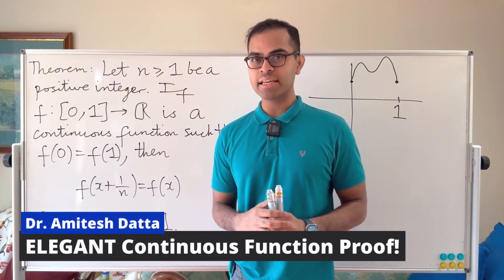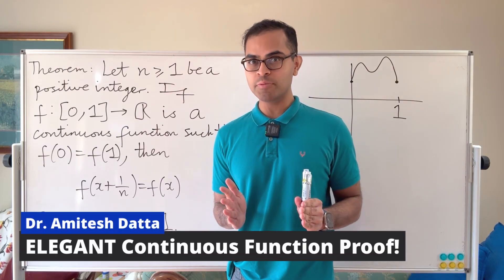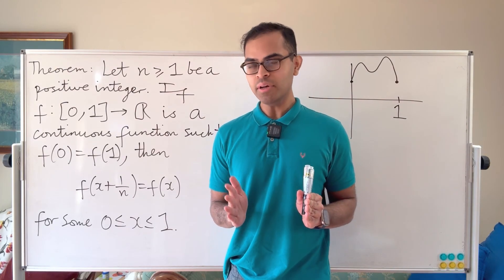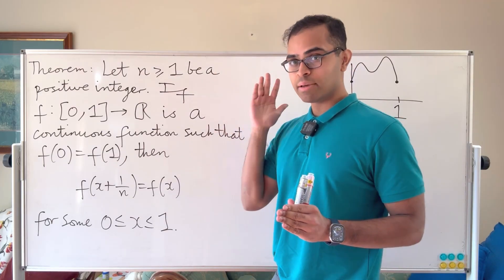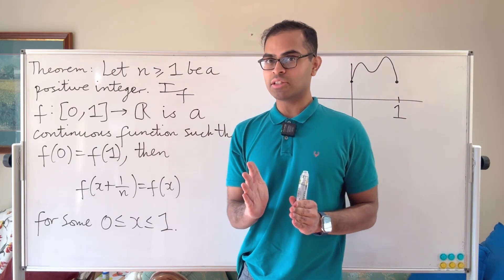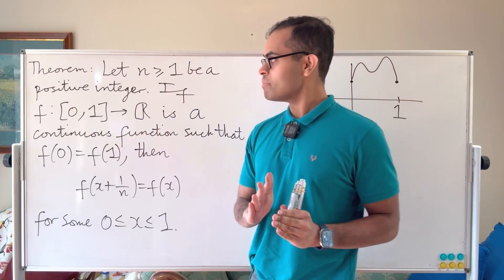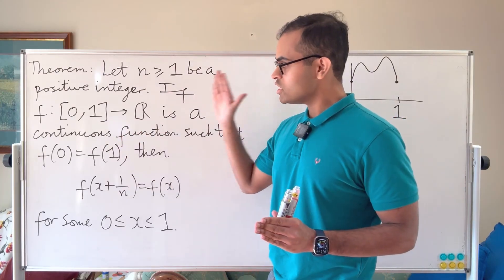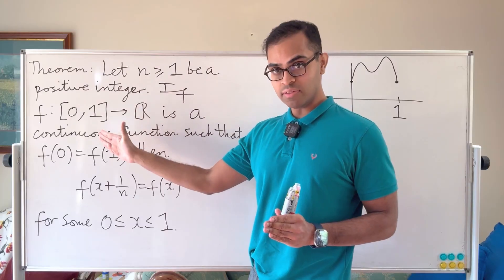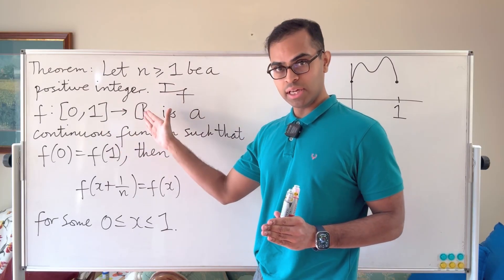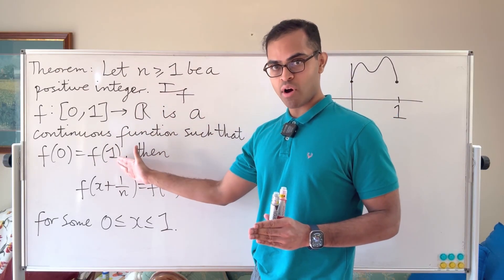Here's a very beautiful calculus exercise that I saw in Spivak's calculus book, and I'm so excited to share it with you. It basically asks the following: if n is a positive integer — so n could be 1, 2, 3, 4, etc. — you fix an n and you have a continuous function from the closed interval [0,1] to the real numbers such that f(0) is equal to f(1).